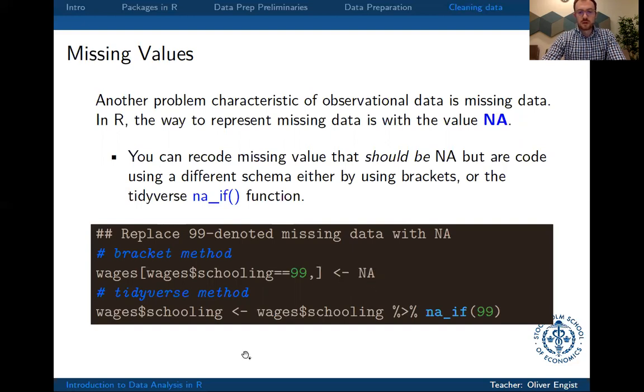And the way to do this in the tidyverse, if you use the brackets, you will basically just filter according to the code for missing value, which in the wages dataset is 99, and then assign this the value NA.